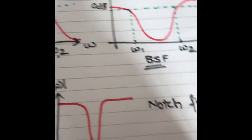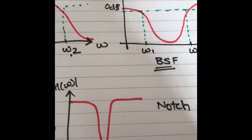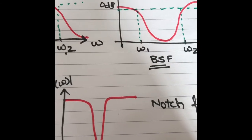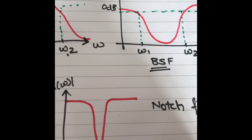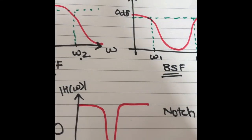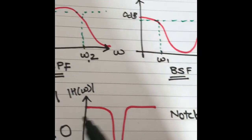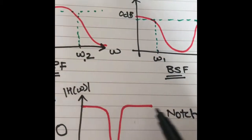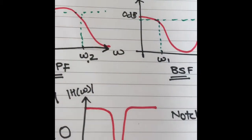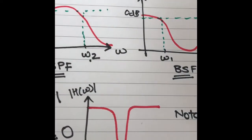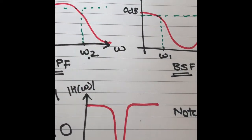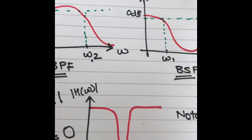There is also the notch filter. A notch filter rejects just one specific notch frequency and passes all other frequencies.